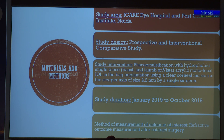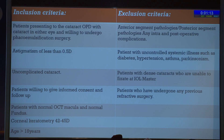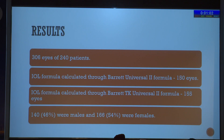The intervention was phacoemulsification done by a single surgeon to reduce SIA, using a single-piece Invista acrylic monofocal IOL implanted in-the-bag via a clear corneal incision. The duration was January 2019 to October 2019, and the outcome measured was the refractive outcome after cataract surgery. Inclusion criteria included all consenting patients with astigmatism less than 0.5 diopters and uncomplicated cataracts. Those with anterior or posterior segment pathologies or uncontrolled systemic illnesses were excluded.